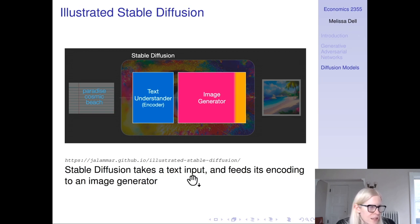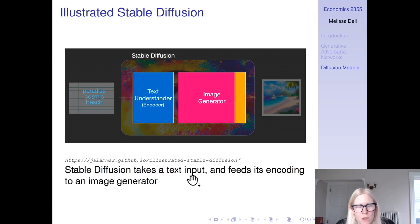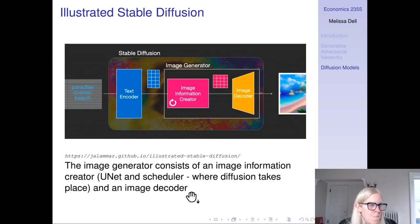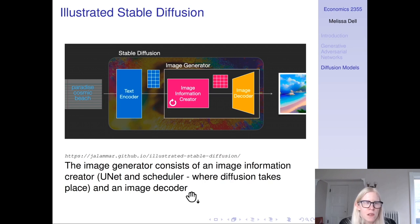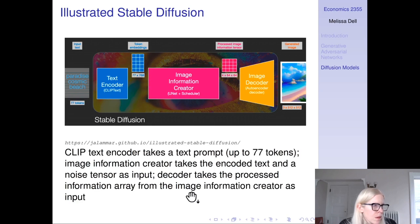Stable diffusion takes a text input — for example, 'Paradise Cosmic Beach' — and feeds the encoding of that text into an image generator, which generates an image from that text prompt. Specifically, the image generator consists of an image information creator, which is a U-Net and a scheduler — this is where the diffusion takes place — and an image decoder. For the text encoder, it uses CLIP, just the text encoder from CLIP, which can take 77 tokens and project 768-dimensional encodings of those.